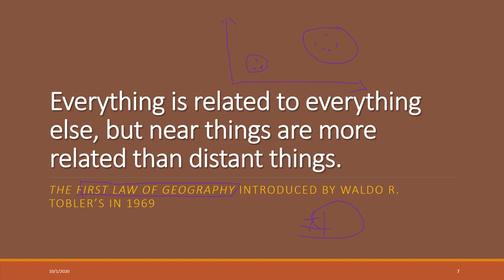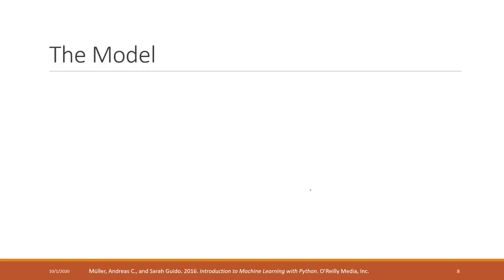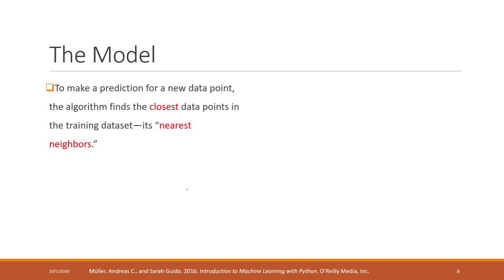If K equals one, then we look at the one closest neighbor. K equals two means we look at two neighbors. K equals three means we look at three neighbors. To make a prediction for new sample points, the algorithm finds the closest points in the training data as its nearest neighbors.